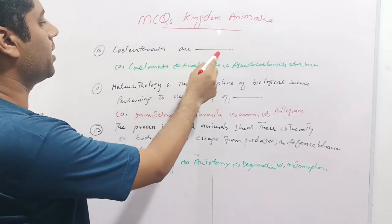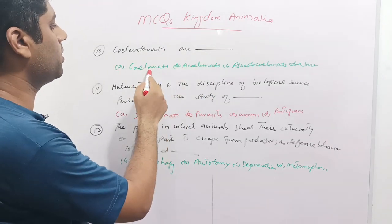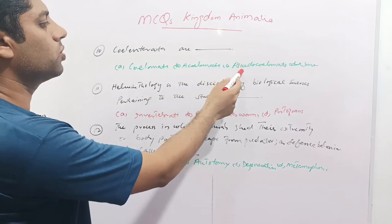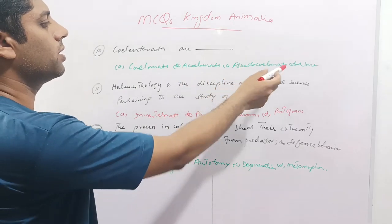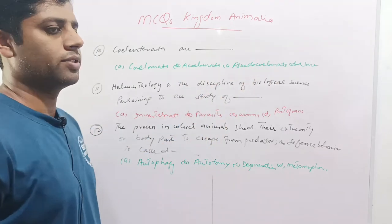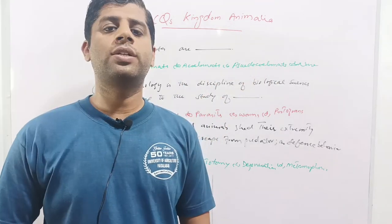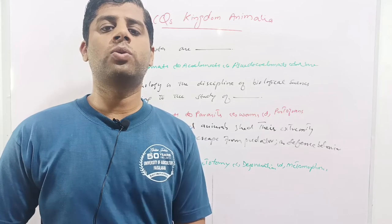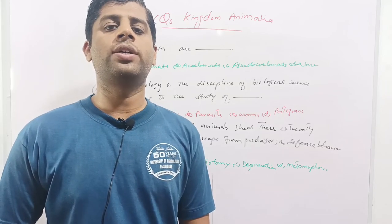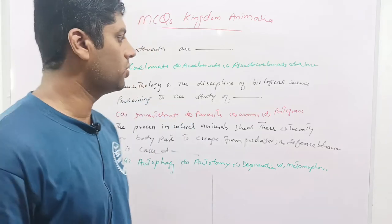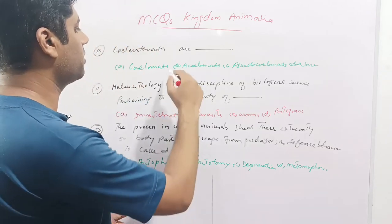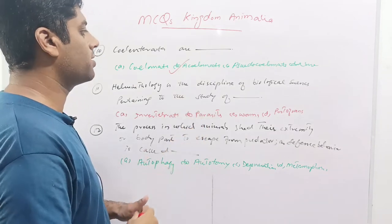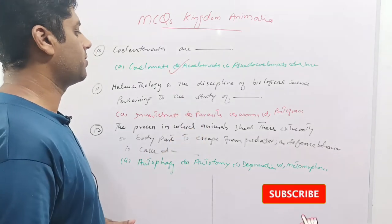Next: coelenterates are classified as what regarding body cavity? Options are coelomates, acoelomates, pseudocoelomates, or none of these. Coelenterates are cnidarians; they lack a coelom or body cavity, so they are called acoelomates. Option D is correct — coelenterates are acoelomates.